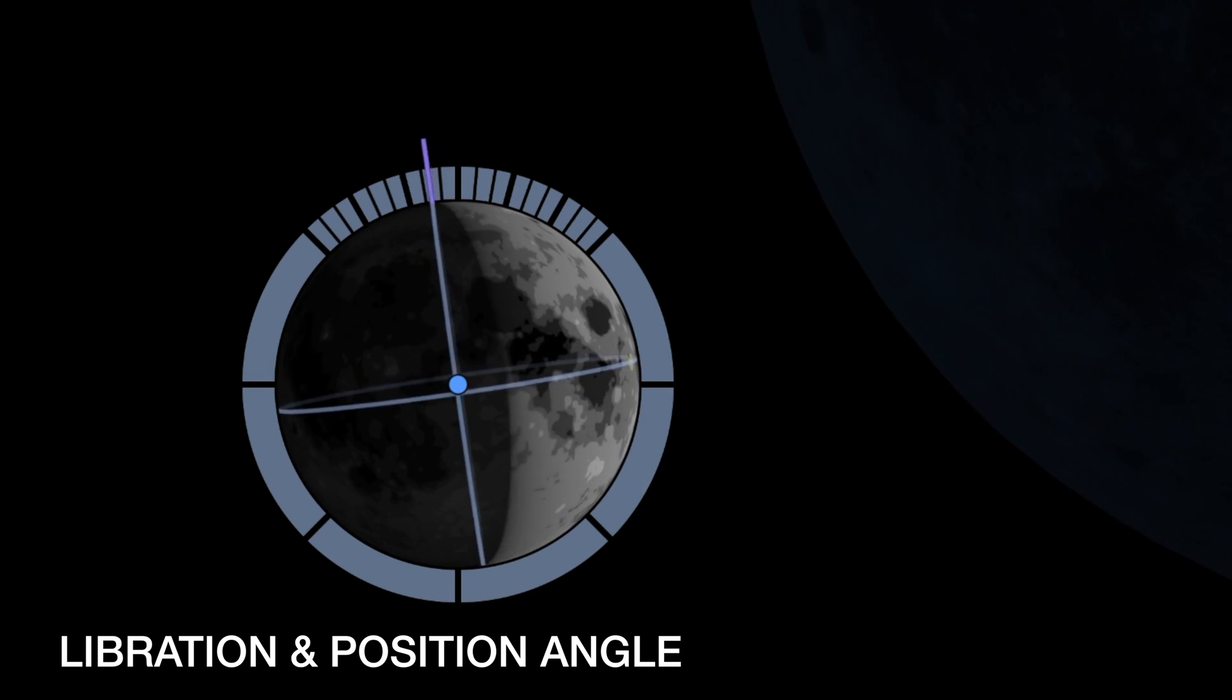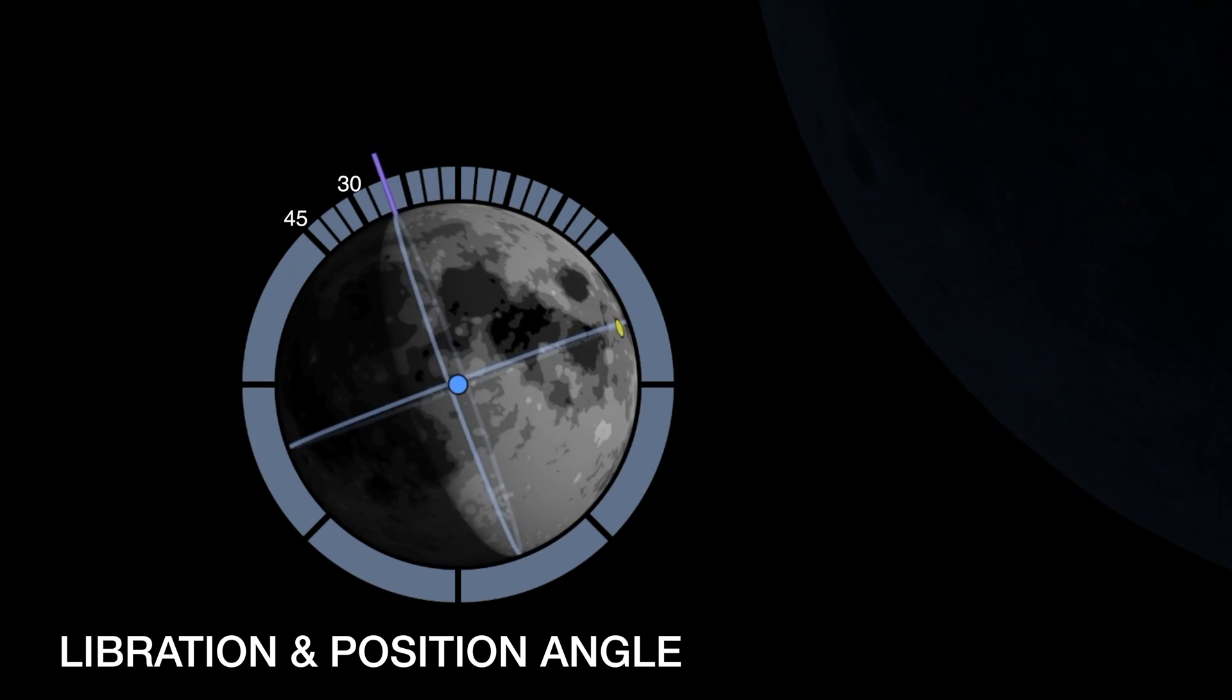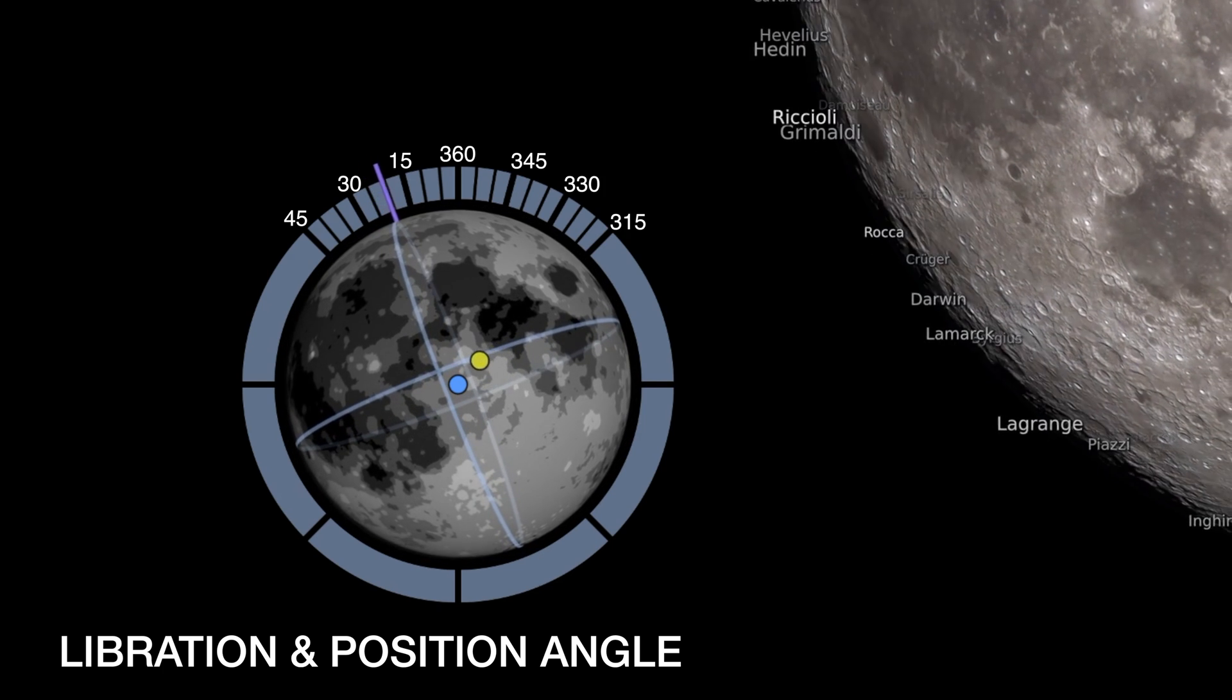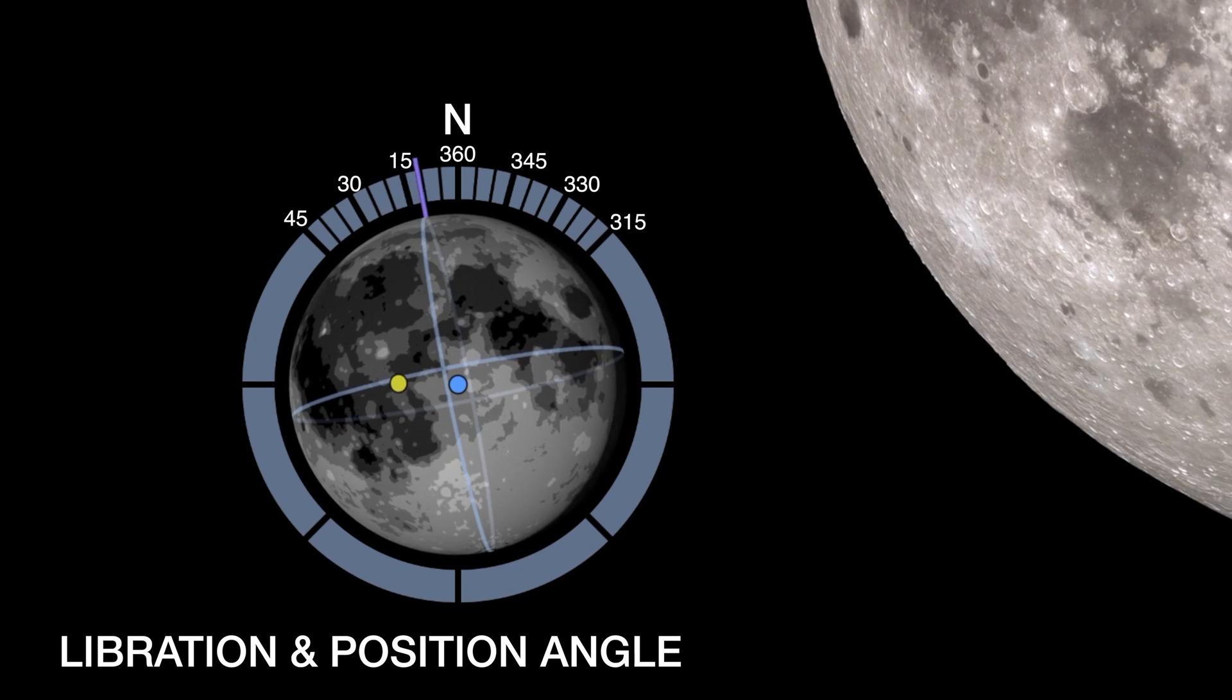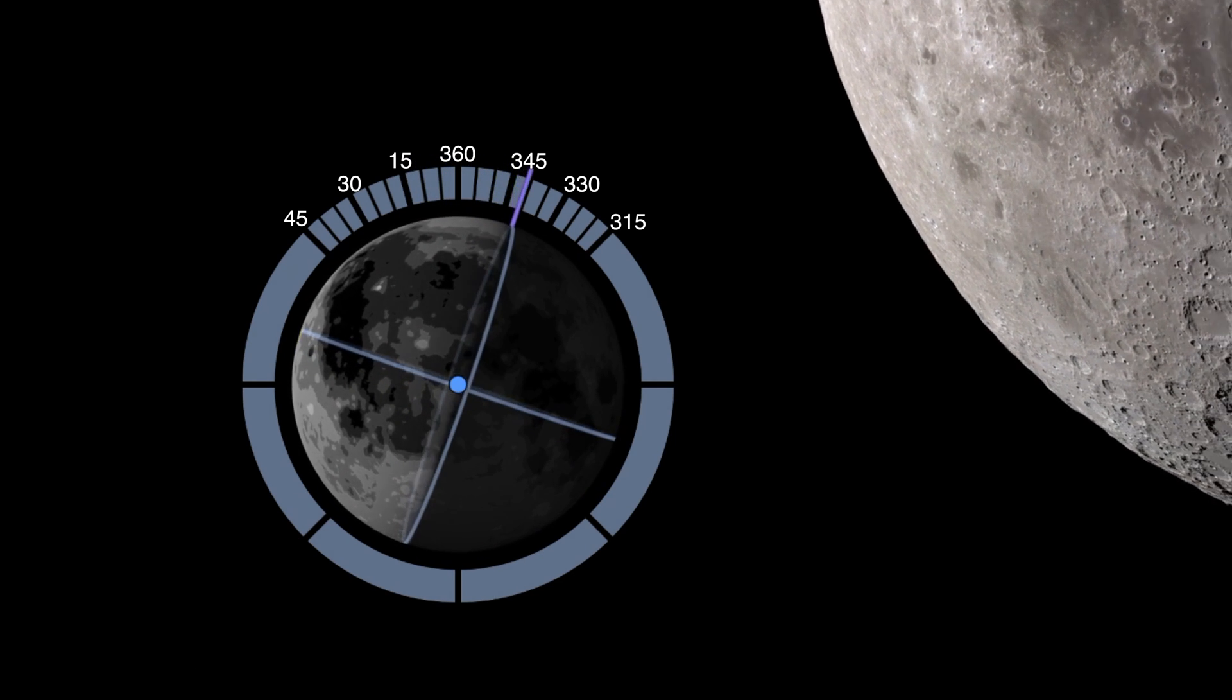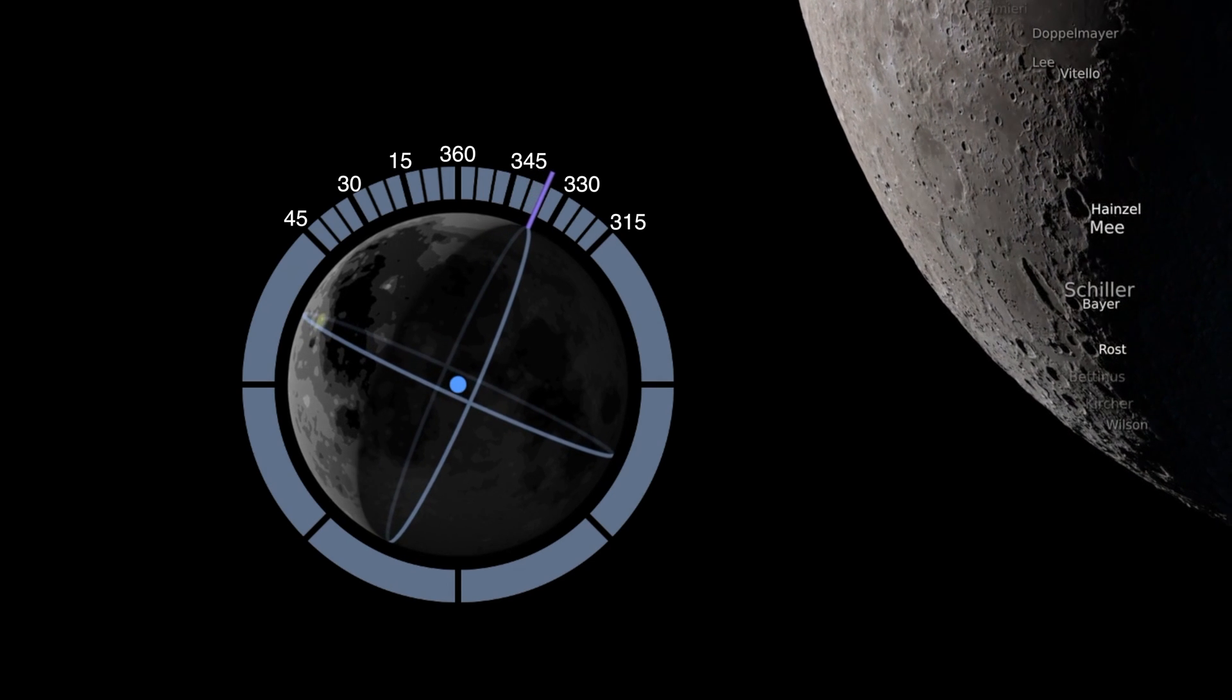These lines at the top are in degrees, five degrees each with north right there being 360 or zero and the rest falling in accordance with that. So we can see how many degrees the moon tilts back and forth in its libration.